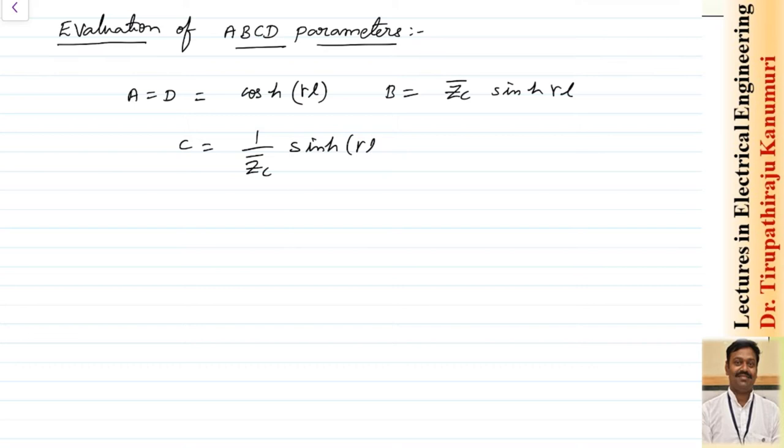So how do we evaluate these hyperbolic functions? Analyzing cosh and sinh is very complex, and the second problem is that we know the value of gamma equals alpha plus j·beta, because it is also a complex value. So analyzing complex hyperbolic functions is very complex.